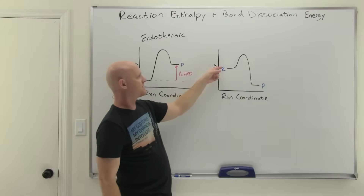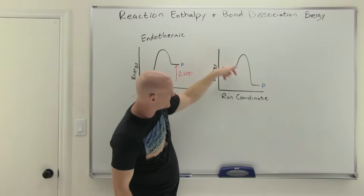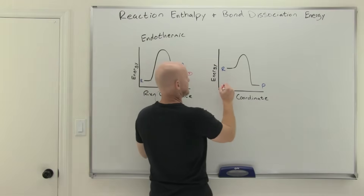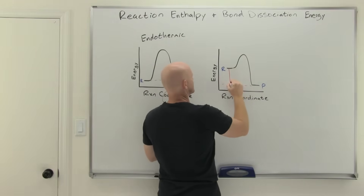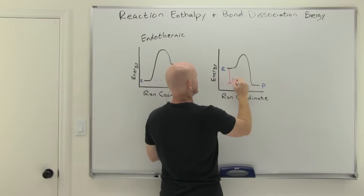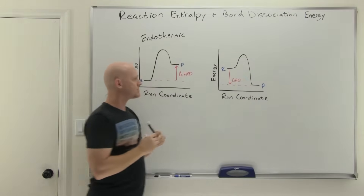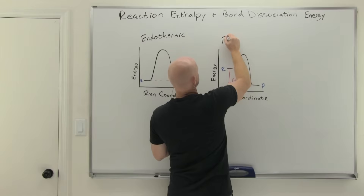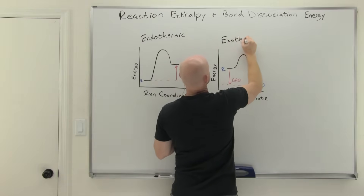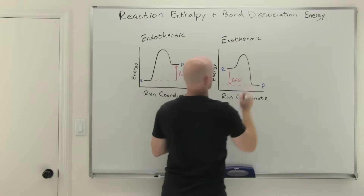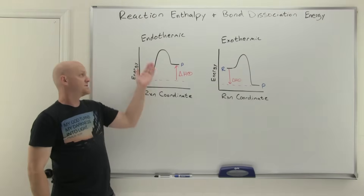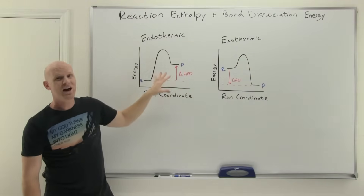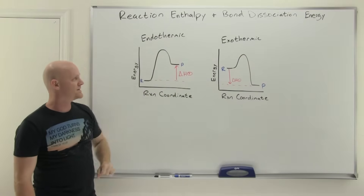The alternative is where your reactant goes downhill in energy overall to get to your products — your products are lower in energy than your reactant — and in that case delta H is going to be negative. That's exothermic. So delta H positive for endothermic and delta H negative for exothermic, and you should recognize these reaction coordinate diagrams.